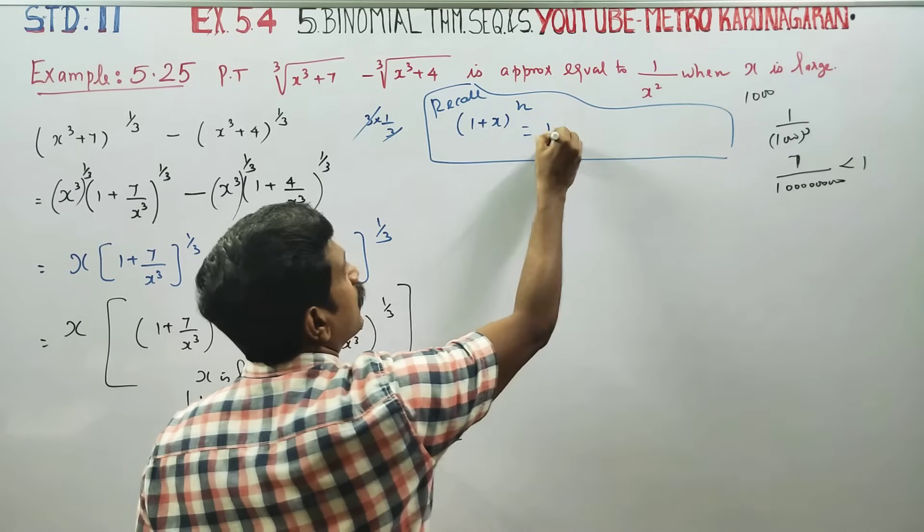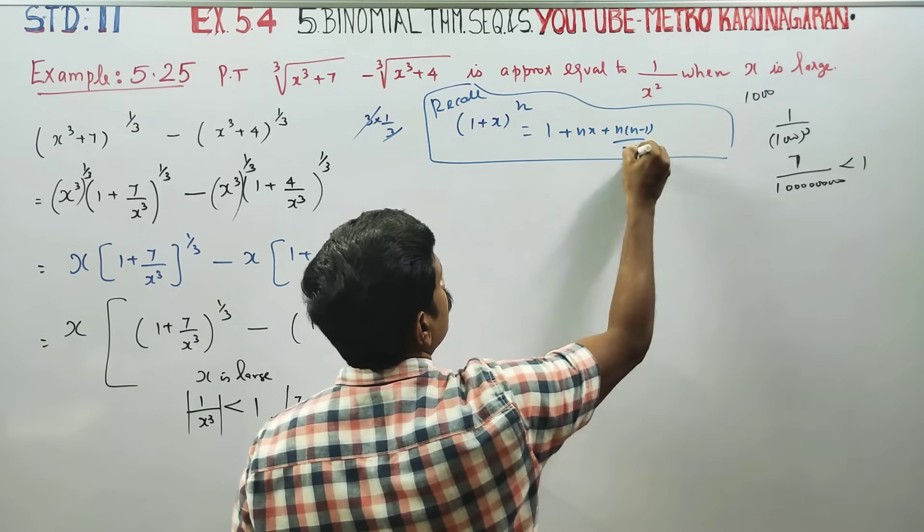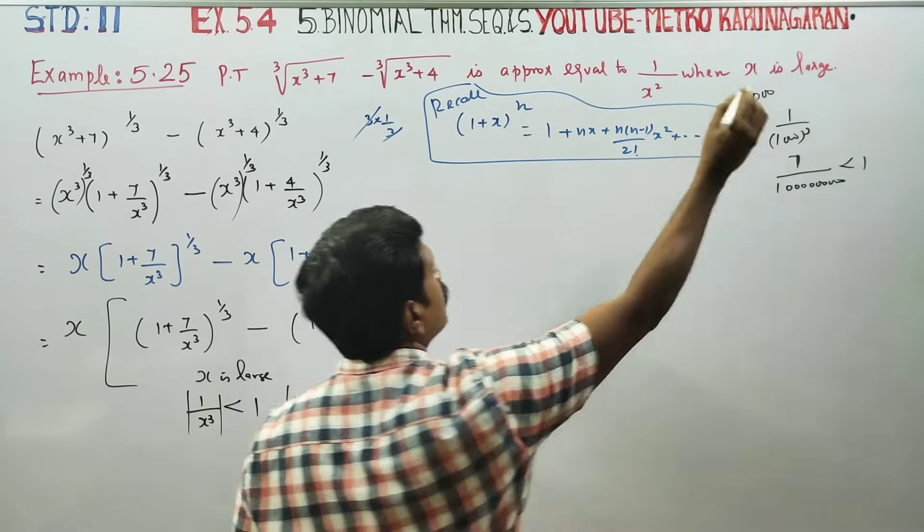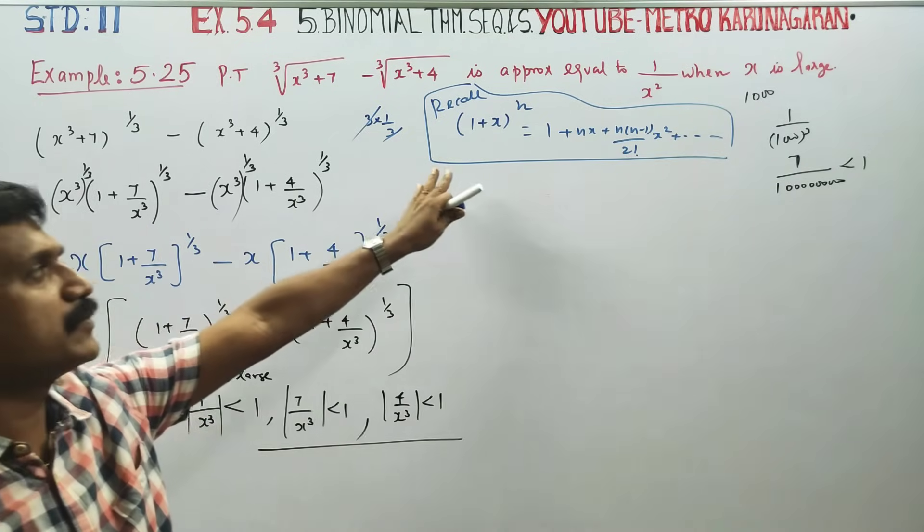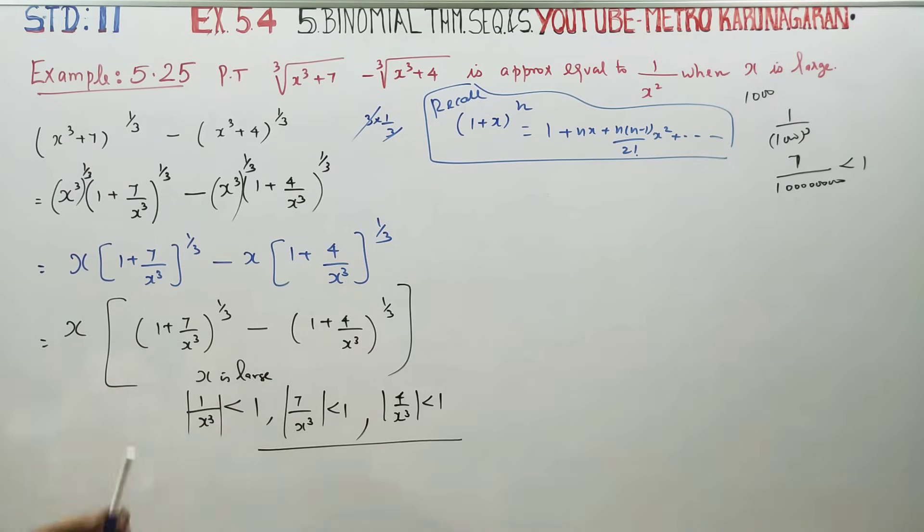The formula is 1 + nx + [n(n-1)/2!]x² and so on. This is the formula for binomial theorem for rational exponents.